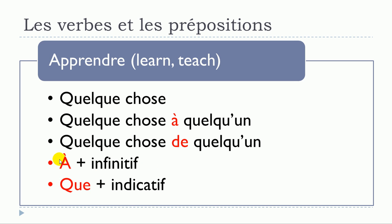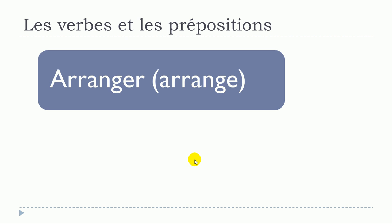Continuing with apprendre: apprendre à + infinitif — connected to 'learn'. And apprendre que + indicatif — be careful, even though we use 'que' here, it should be followed by the indicatif, not the subjonctif. So: apprendre quelque chose (learn), apprendre quelque chose à quelqu'un (teach), apprendre quelque chose de quelqu'un (learn), apprendre à + infinitif (learn), apprendre que + indicatif (learn).